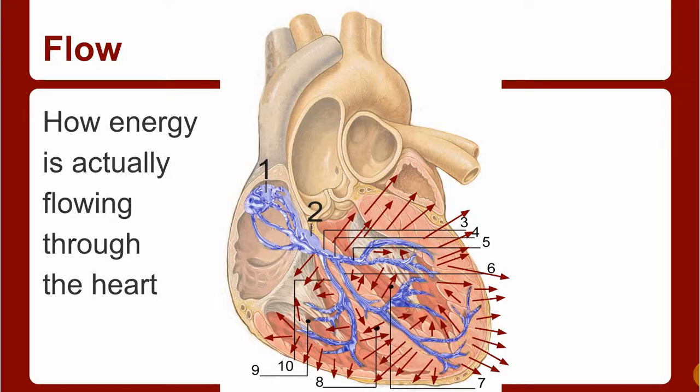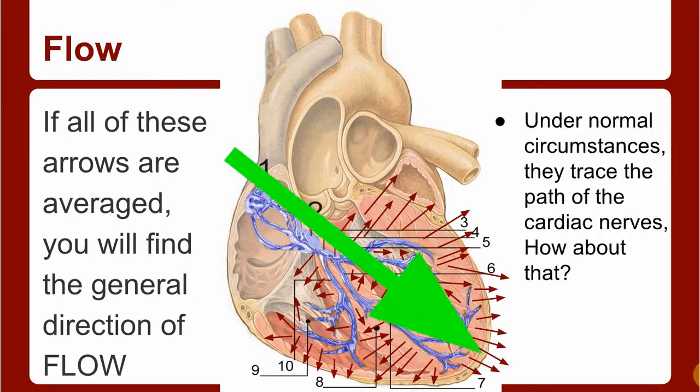If they're all average general direction of flow and under normal circumstances it follows the green arrow, which would be good. If all the electricity is flowing through the heart normally, chances are there's nothing pathologically or physiologically that's going wrong, which is always a good sign.